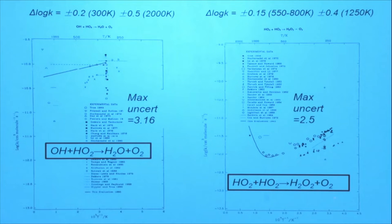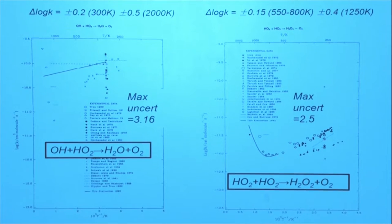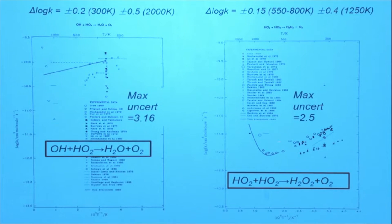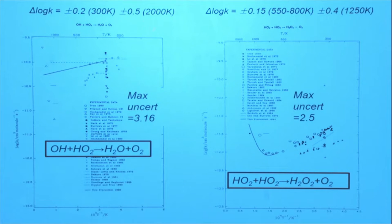Given another example here, HO2 plus HO2. Here the data sits more tightly around a fit, but there are some scattered values. So again, the uncertainty is reasonably large with an uncertainty factor of 2.5. And actually, for both these cases, there's an uncertainty given at two temperatures, which would allow you to have some uncertainty information about the temperature dependence of the rate constant, which is useful.